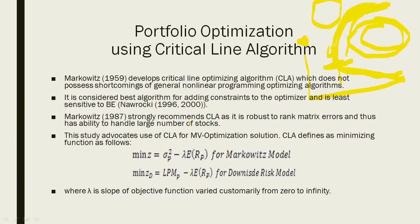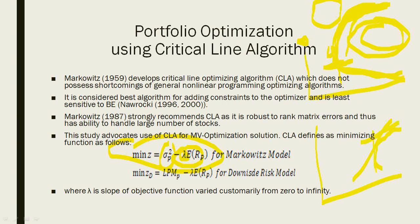When we normally build an efficient frontier using simpler methods, we get the downside portion as well, so we only concentrate on the upper portion. This brings up the problem of general non-linear programming optimization. To solve this, we follow the Markowitz critical line optimization algorithm.